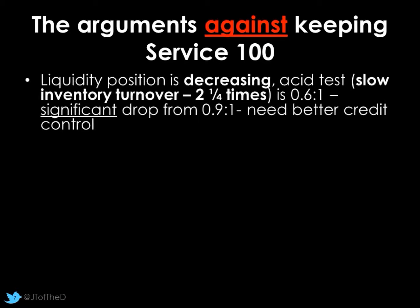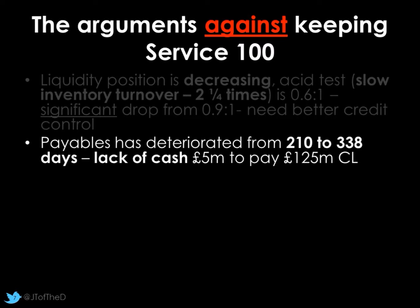What about the counter arguments? Liquidity is probably the most important concern — it's decreasing. Our acid test, which is more important due to the amount of stock we hold, has dropped from 0.9:1 to 0.6:1. That's quite dramatic — we would not be able to cover debts very quickly. We've only got £5 million worth of cash, so credit control needs to be improved. Could getting rid of Service 100 help us? Certainly we'd have £70 million more in the bank if we retained our sales. Payables has deteriorated from 210 to 338 — it's a lack of cash, with a lot of money tied up with customers who haven't paid.